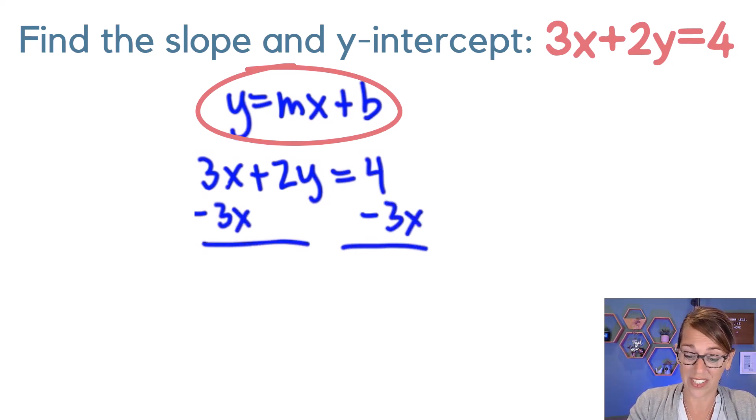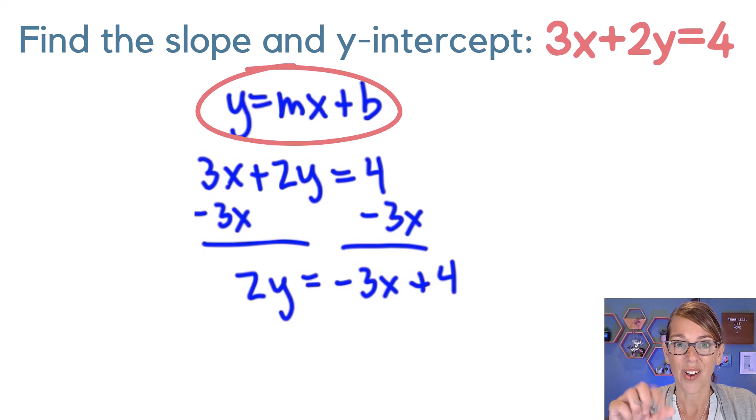Looks a lot like the one that we just did. So I get 2y, that's a 2 not a z, equals, let's do the 3x term first, negative 3x plus 4. Almost there, but I've got that 2 multiplied by the y. So I need to divide everybody, both sides, by the 2. Divide by 2, divide by 2.